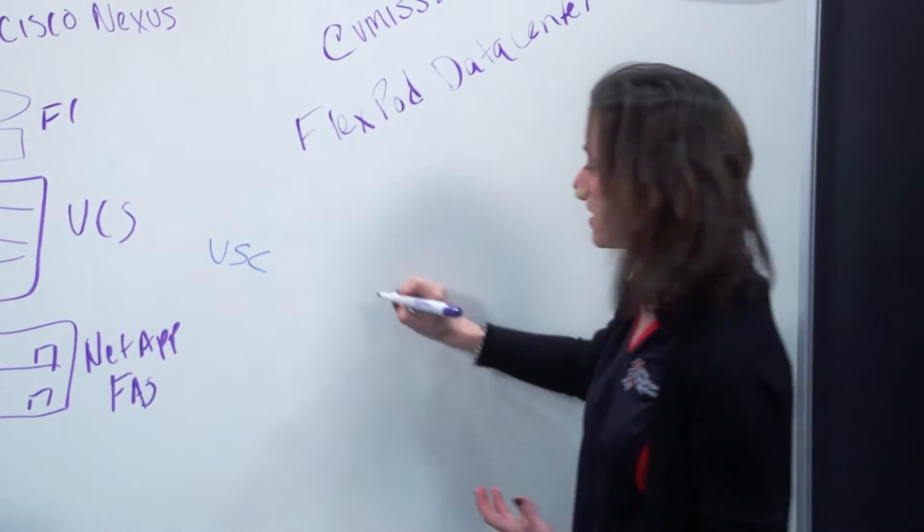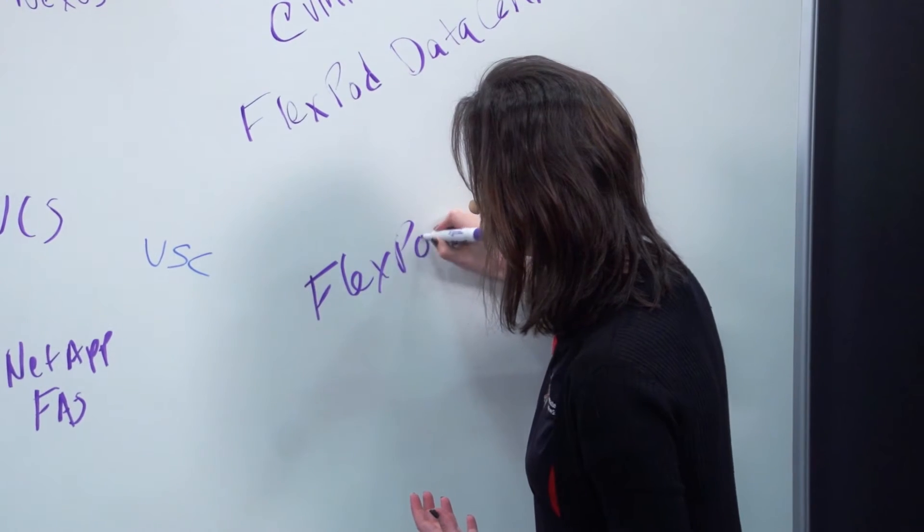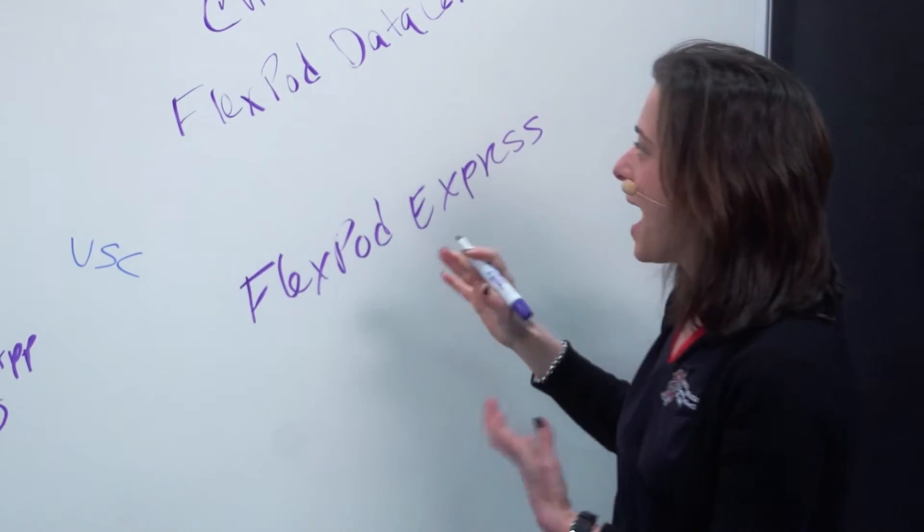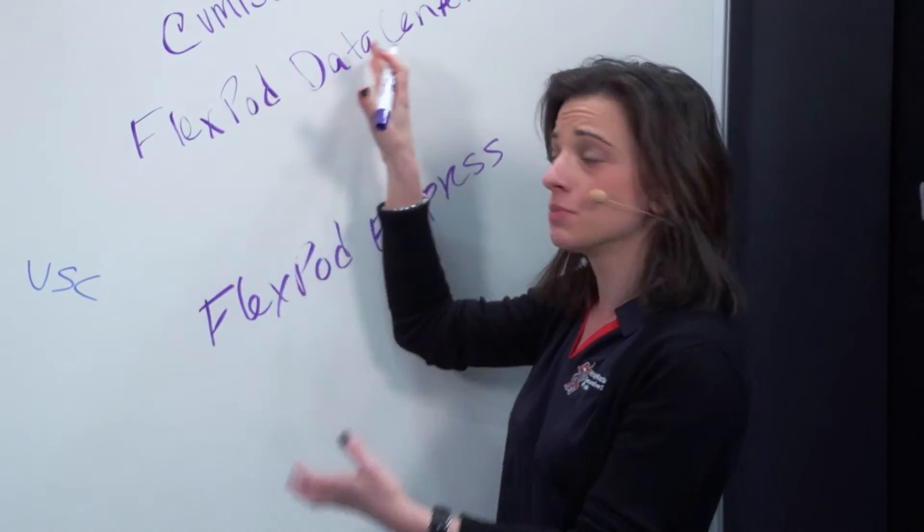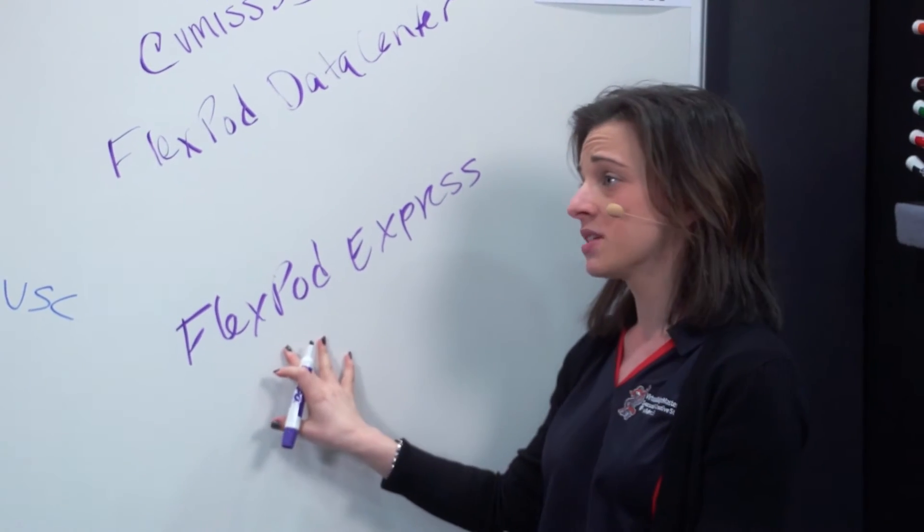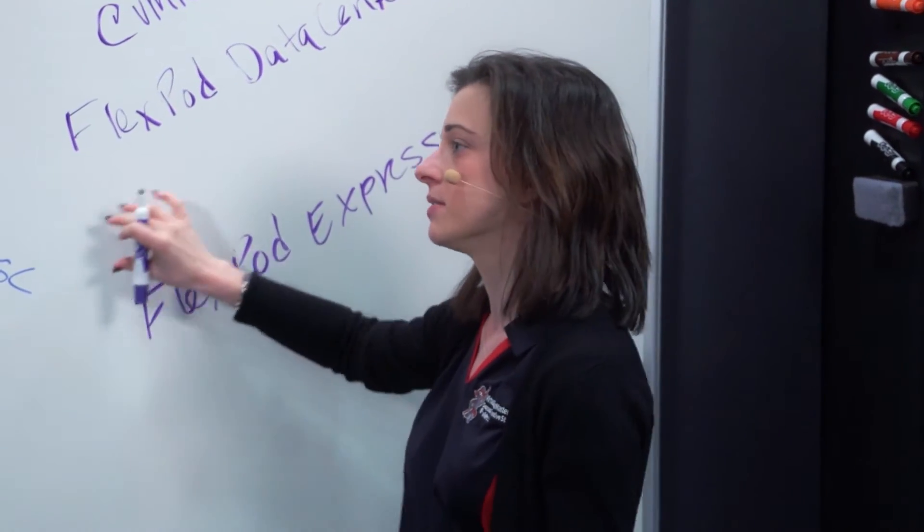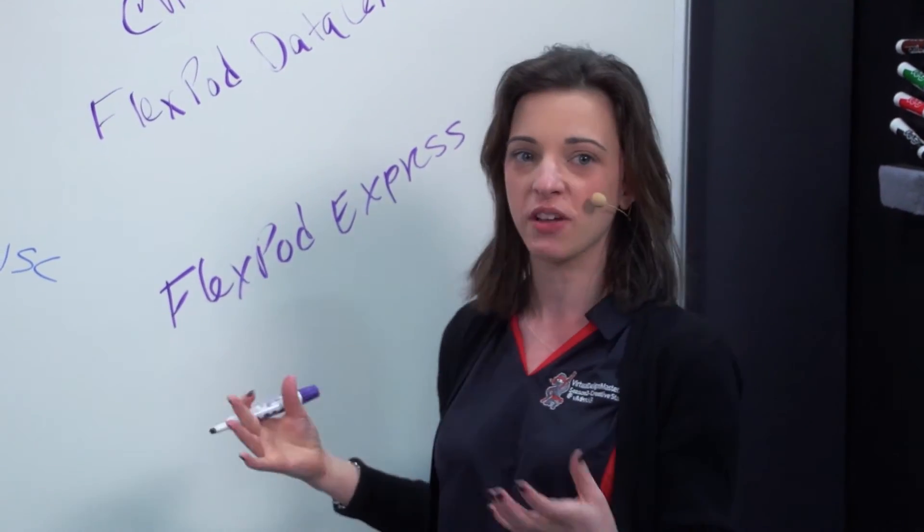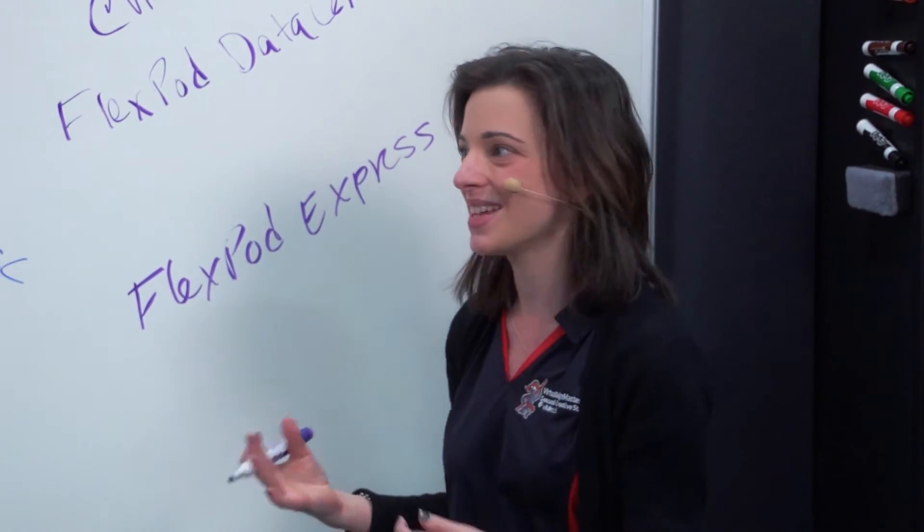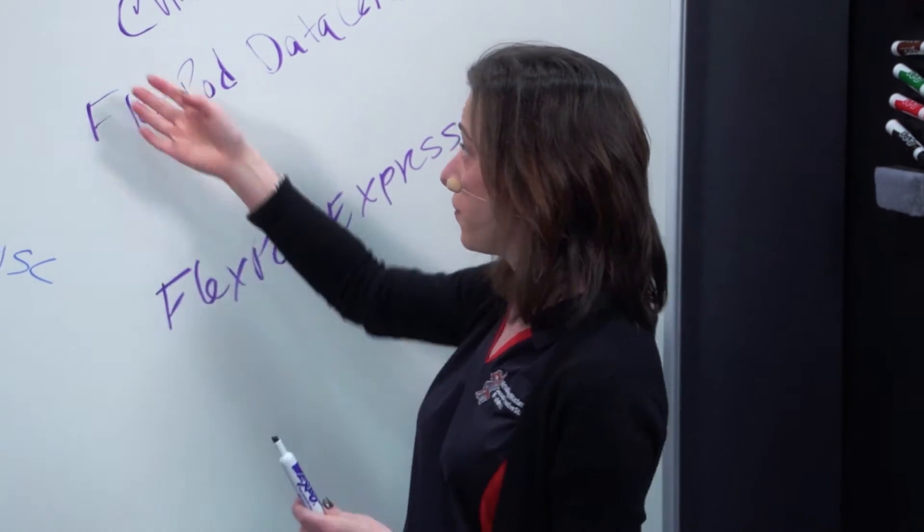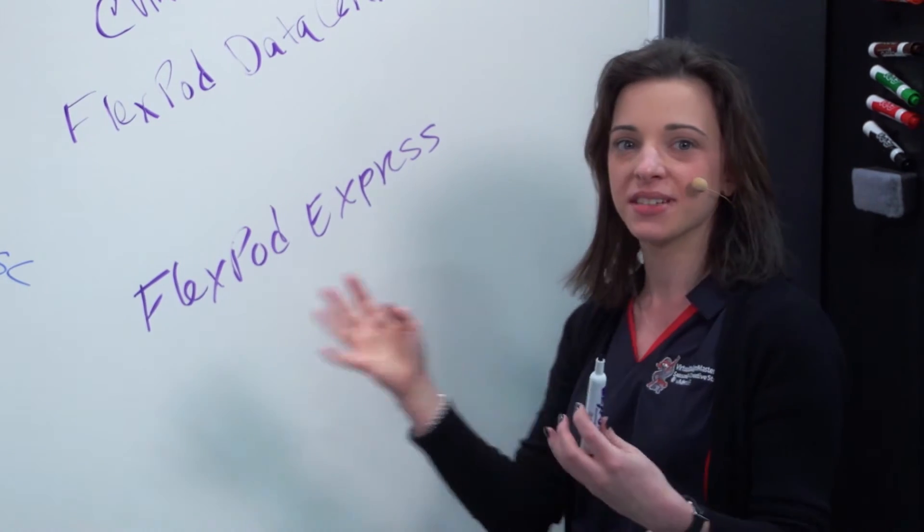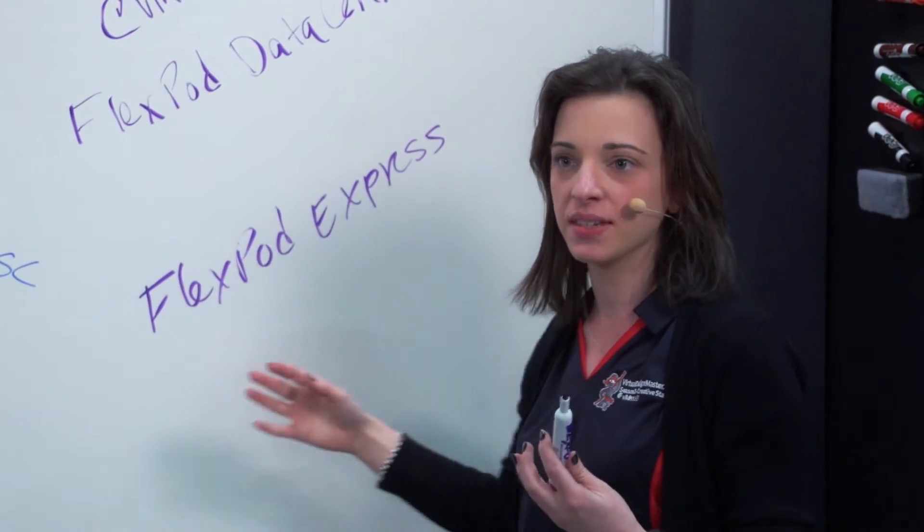So your SMB customer, we have something called FlexPod Express. So for the SMB space, you might use a smaller FlexPod Data Center with not as many blade chassis, not as much storage, or you might use a FlexPod Express, which you'll use the Cisco C-Series blade servers and a FAS 2500. So this is really good for your SMBs, your small sites, stuff like that. So you can have your FlexPod Data Center in your main data center. Then you can have your FlexPod Express in your satellite sites, and you can manage everything the same way with